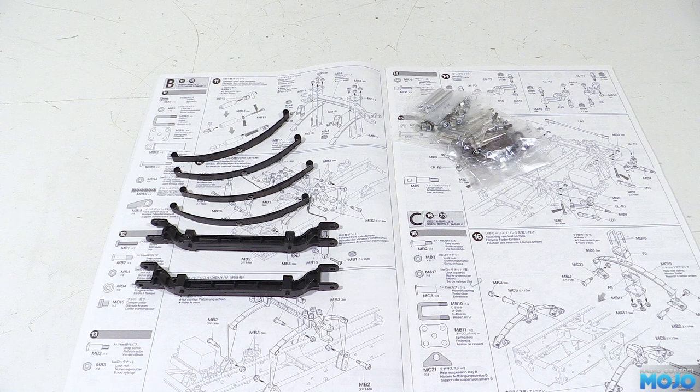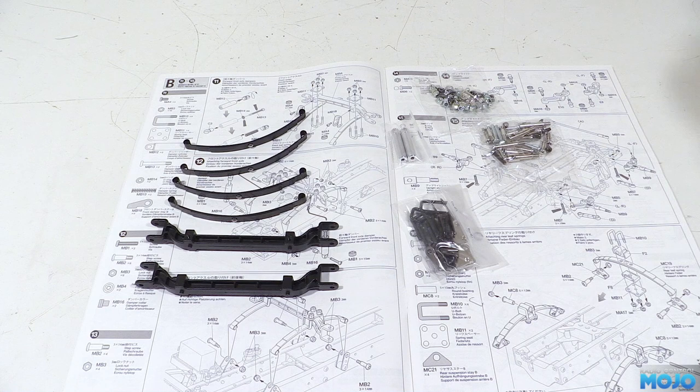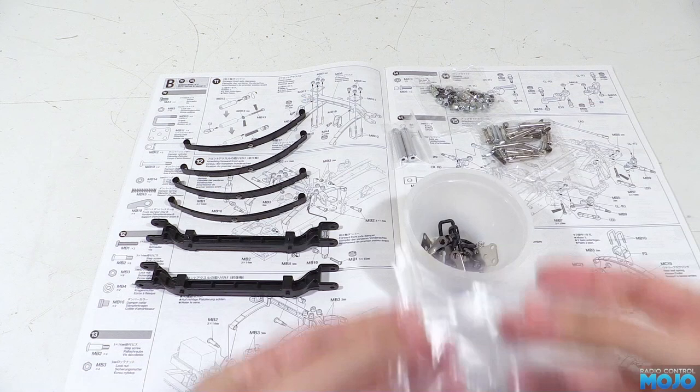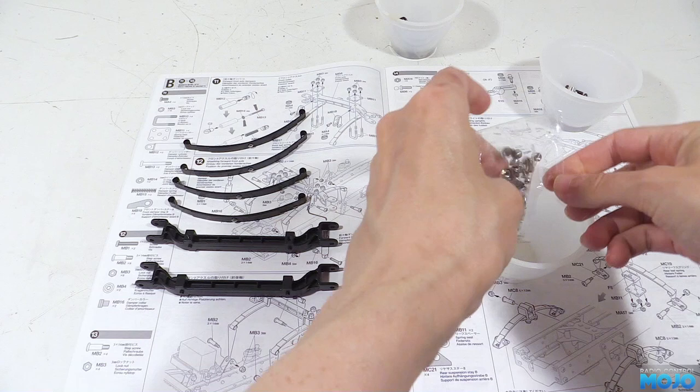In the bag then we have the metal axles, leaf springs and four parts bags. There's the fake dampers, lots of step screws, u-bolts and miscellaneous screws and nuts. Once decanted into the pudding pots, we can get step 11 underway.